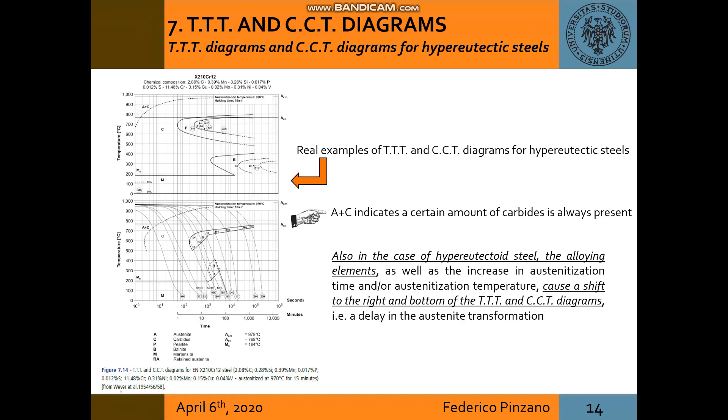Here are shown real examples of TTT and CCT diagrams for hypereutectoid steels. Also in this type of steels, the alloying elements as well as the increase in austenization time and or austenization temperature cause a shift to the right and the bottom of TTT and CCT diagrams, so a delay in the austenite transformation.